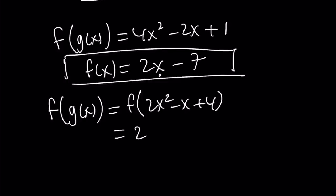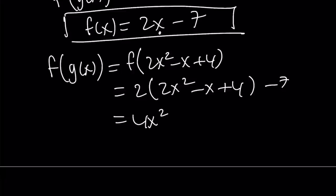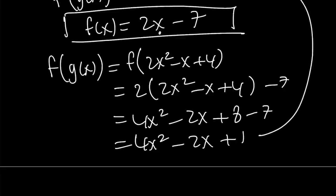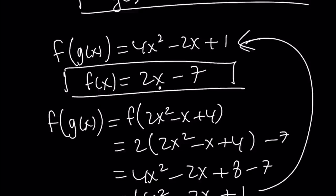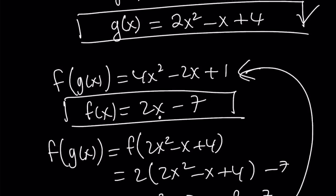So we're going to multiply this expression by 2 and subtract 7 from it. And that's going to give us 4x squared minus 2x plus 8 minus 7, which is equal to 4x squared minus 2x plus 1. And as you know, that is the same thing as f(g(x)). So our solution checks, and this brings us to the end of this video.